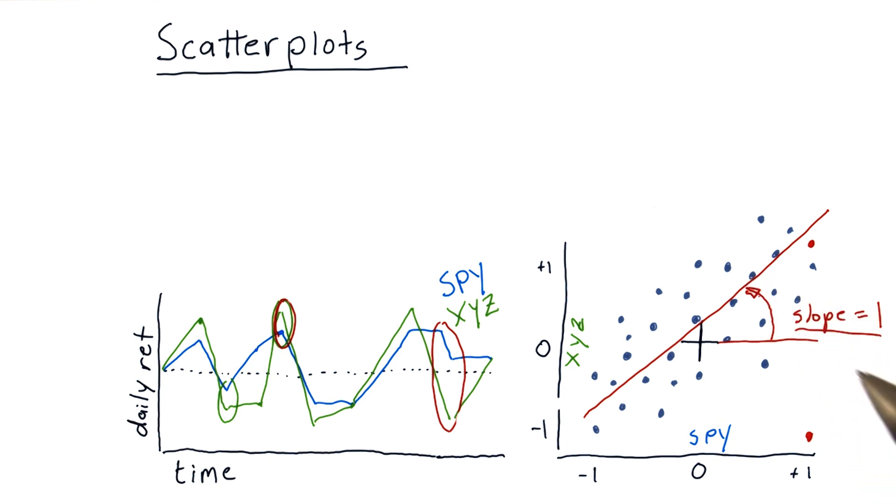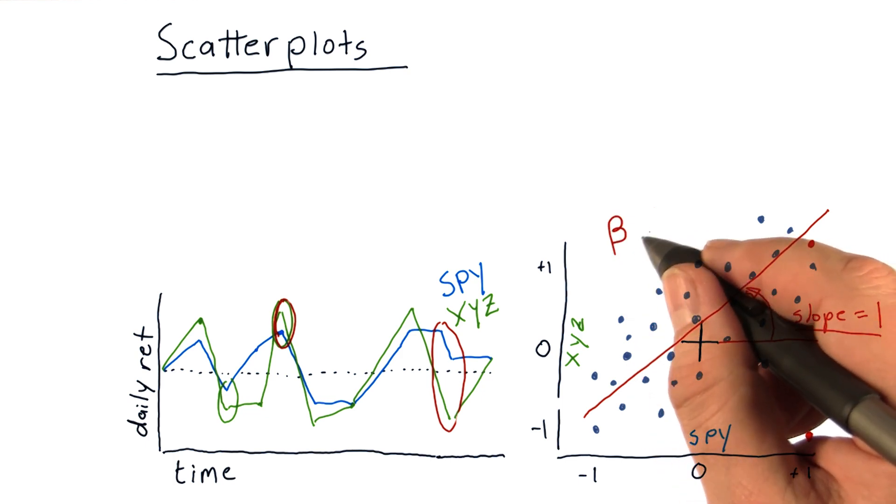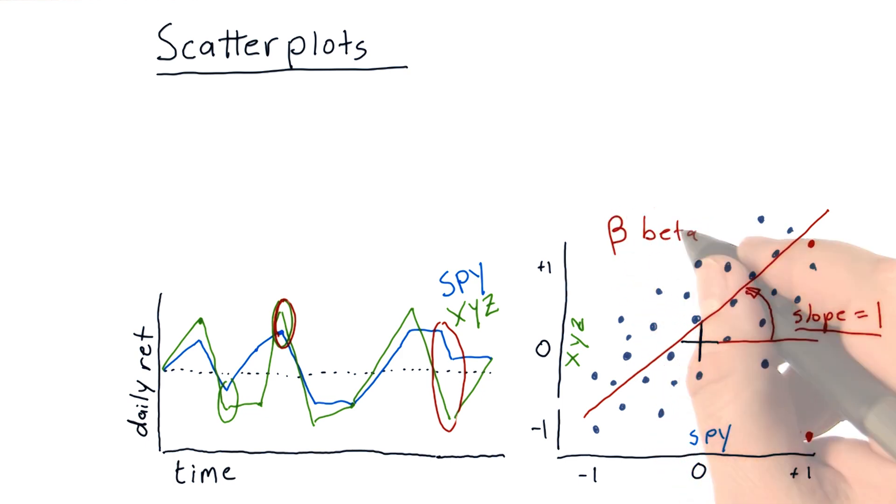This slope in financial terminology is usually referred to as beta, with this symbol or just the word beta. And what beta means is how reactive is the stock to the market?